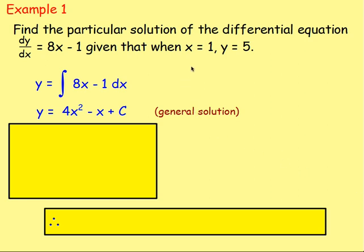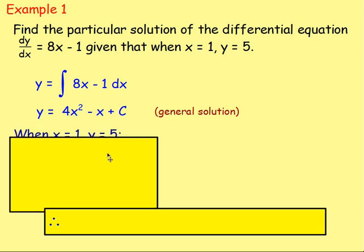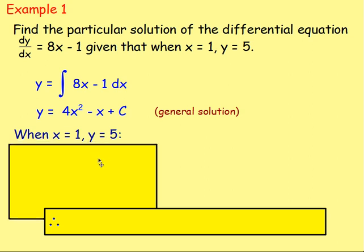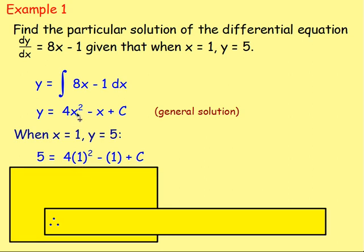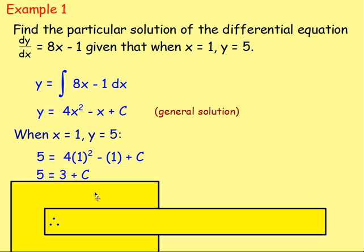That is it integrated. Now look at the additional information. We're told that x is 1 and y is 5, so you can sub these values in. The only unknown will be c. So you would have 5 equals 4 times 1 squared, minus 1, plus c — we're just subbing that into the general solution. Work that out: 5 equals 3 add c, meaning the value of c is just 2.